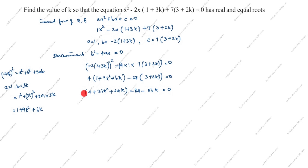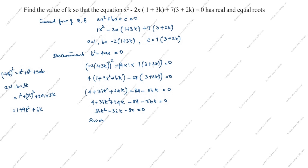Next we will remove the brackets: 4 plus 36k squared plus 24k minus 84 minus 56k equals 0. Collecting like terms: 36k squared plus (24k minus 56k) is minus 32k, and (4 minus 84) is minus 80, equals 0. Next divide everything by 4.